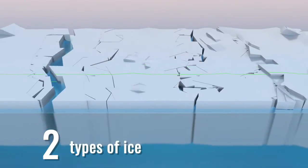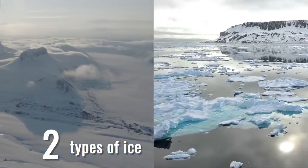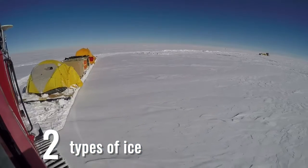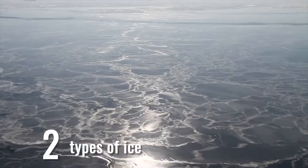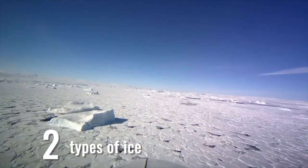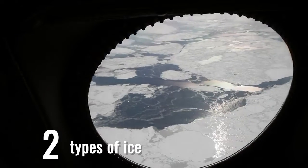There are two types of ice that ICESat-2 is after, land ice and sea ice. Land ice builds up year after year from snowfall, but sea ice forms when the ocean water freezes. It can last for years or just one winter.